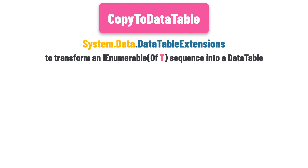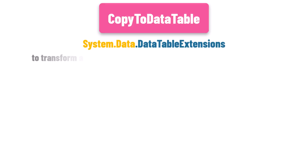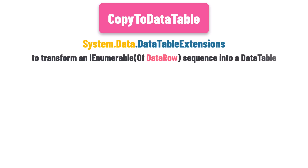Here, T represents the data type within the sequence, which must be a DataRow. If T isn't a DataRow, the method will not work and will throw an error. In simple terms, CopyToDataTable turns an IEnumerable of DataRow into a DataTable, a feature very useful in LINQ when handling data sequences that you want to work with in a table format.